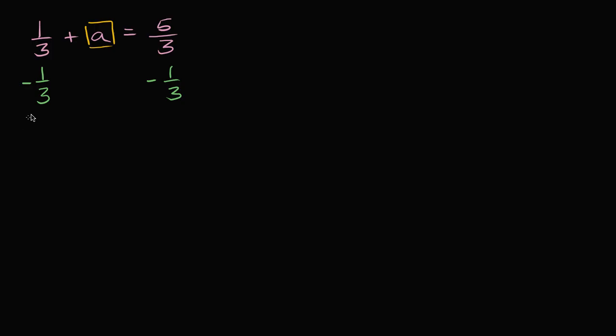And if I do that, then on the left-hand side, one-third minus one-third, that's the whole reason why I subtracted one-third, was to get rid of the one-third. And I am left with a is equal to five-thirds minus one-third. And what is that going to be equal to? I have five of something, in this case I have five-thirds, and I'm going to subtract one-third. So I'm going to be left with four-thirds. So I could write a is equal to four-thirds.